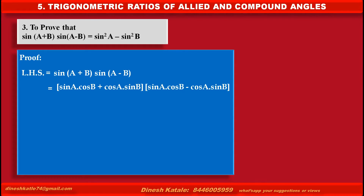In these two brackets, we can use the identity (x+y)(x−y) = x² − y². So the next step is equal to sin²A · cos²B minus cos²A · sin²B.